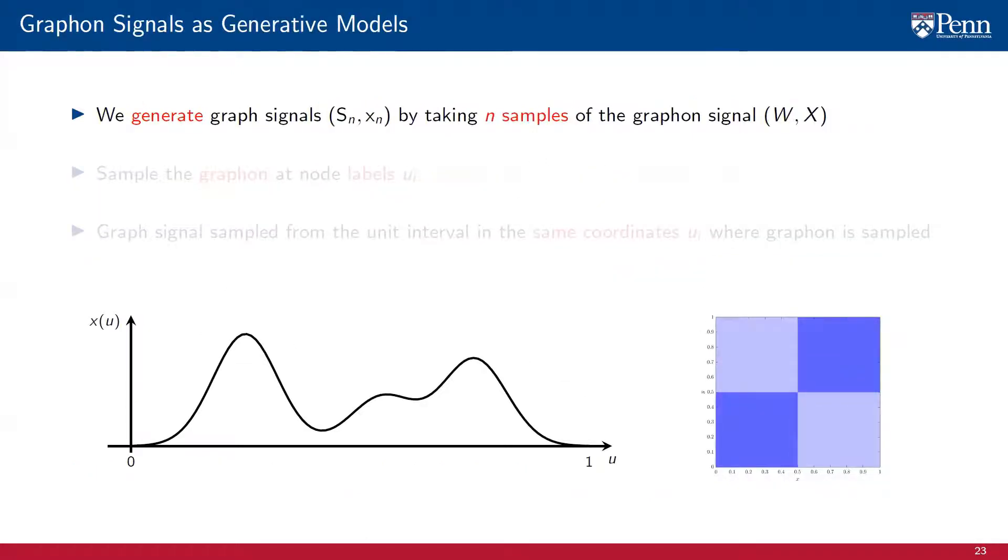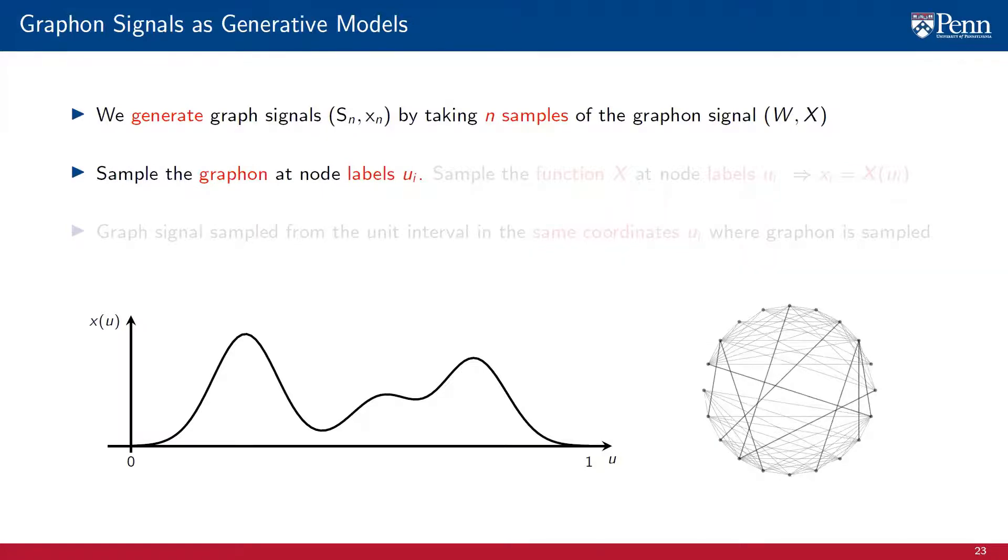The use of a graphon signal as a generative model involves the generation of graph signals (S_N, X_N) by taking N samples of the graphon signal (W, X). The sampling process involves the selection of labels u_i and the sampling of the graphon at these labels. The sampling can be stochastic or weighted, same as when we sample graphs from graphons. The difference is that now we add a sampling of the function X at node labels u_i. This generates the values of the graph signal associated with corresponding nodes.